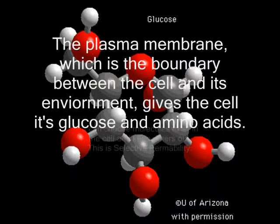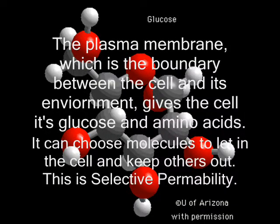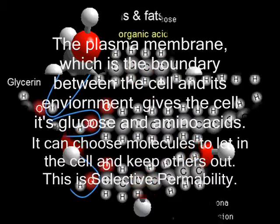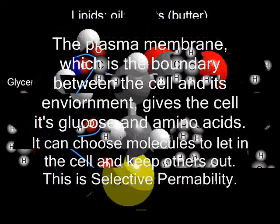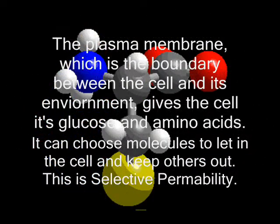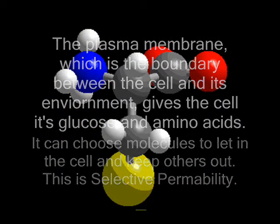The plasma membrane, which is the boundary between the cell and its environment, gives the cell its glucose and amino acids. It can choose molecules to let into the cell and keep others out. This is selective permeability.